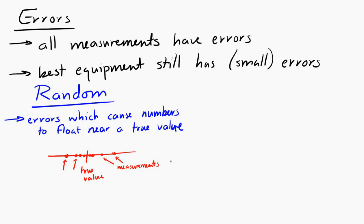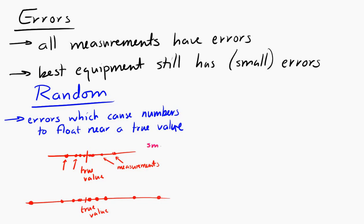Random errors can also be big. If the students are all doing the measurement of the string while standing in the back of a moving truck, then they'll float around the true value, but they'll float around a lot. Sometimes random error is referred to as noise in the data.